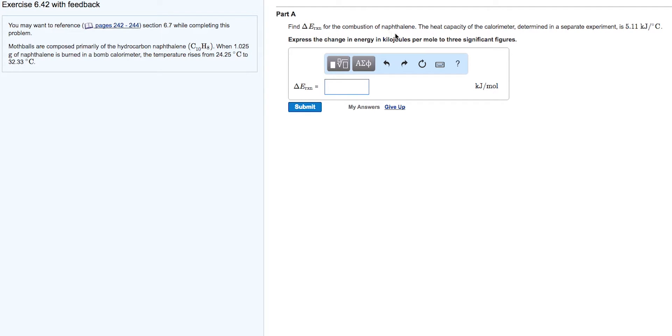Find delta E reaction for the combustion of naphthalene. The heat capacity of the calorimeter, determined in a separate experiment, is 5.11 kilojoules per degree centigrade.